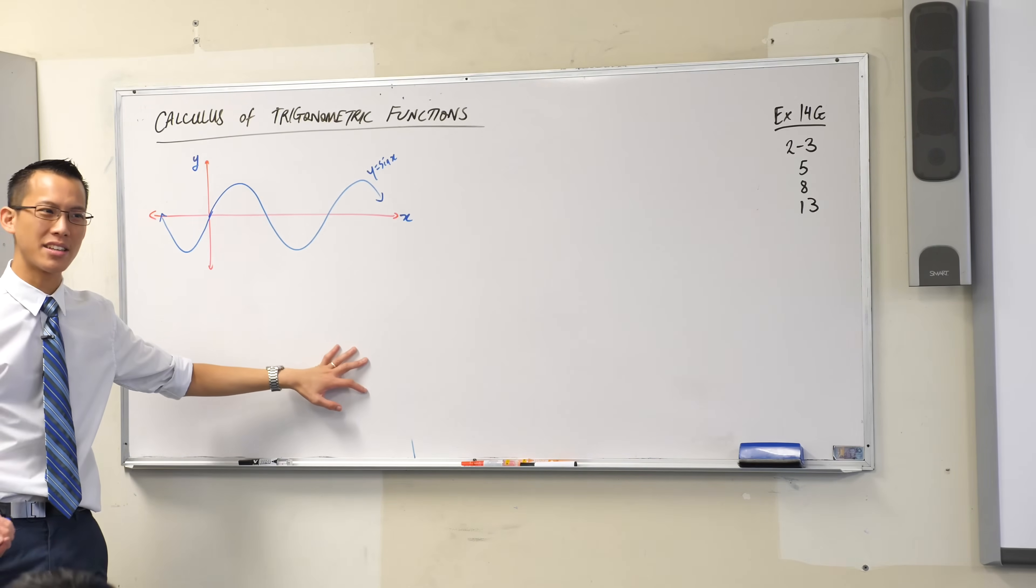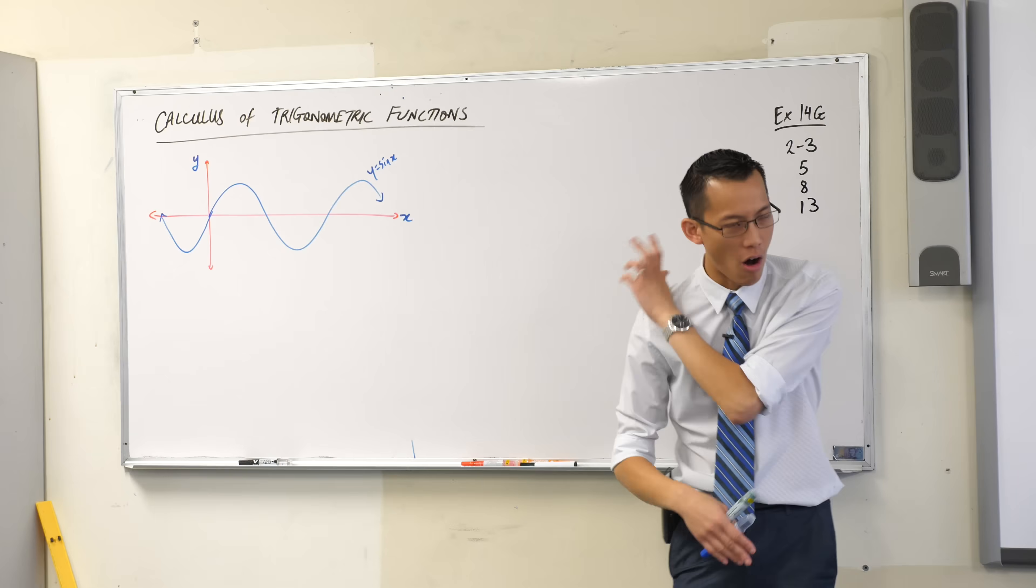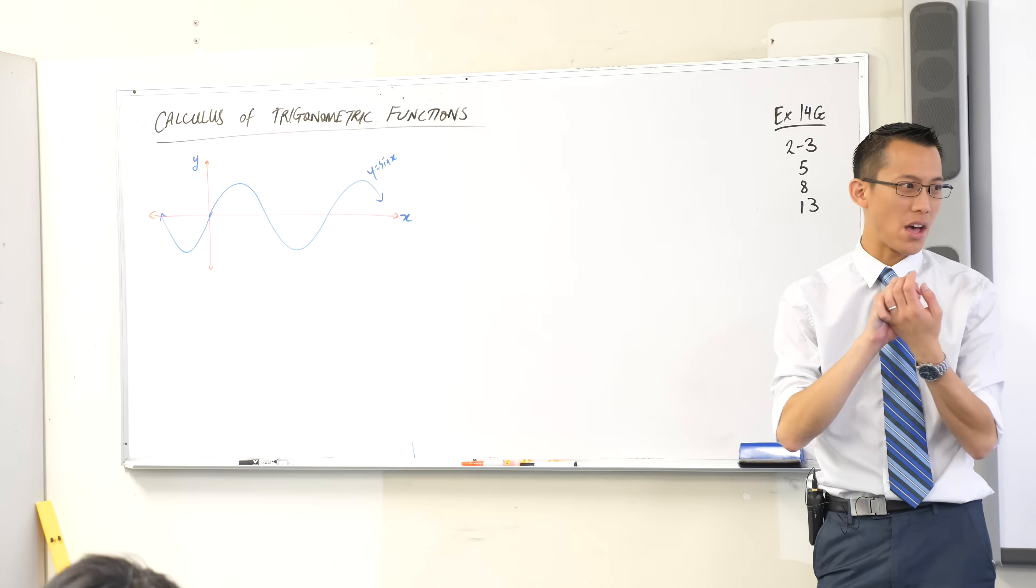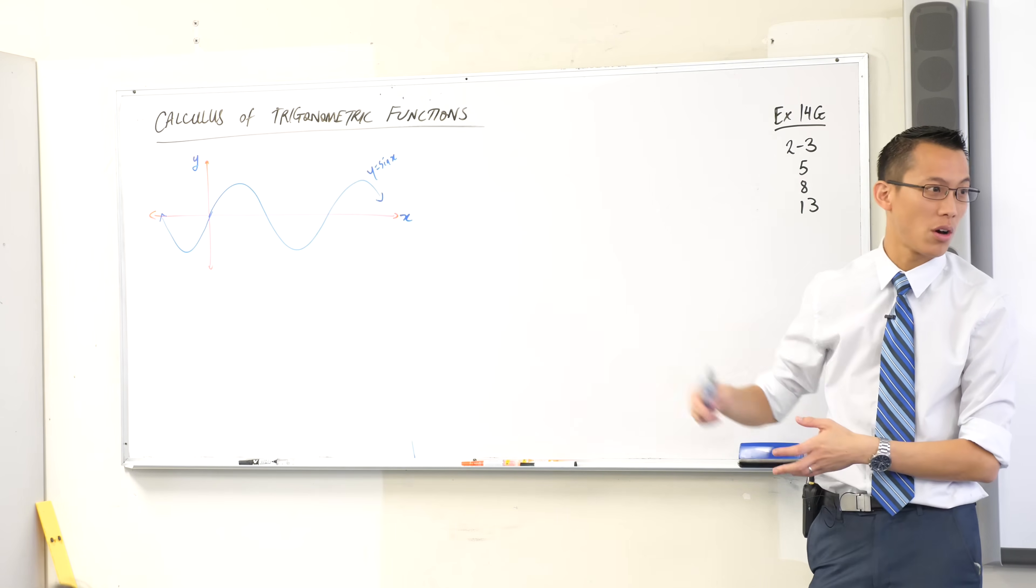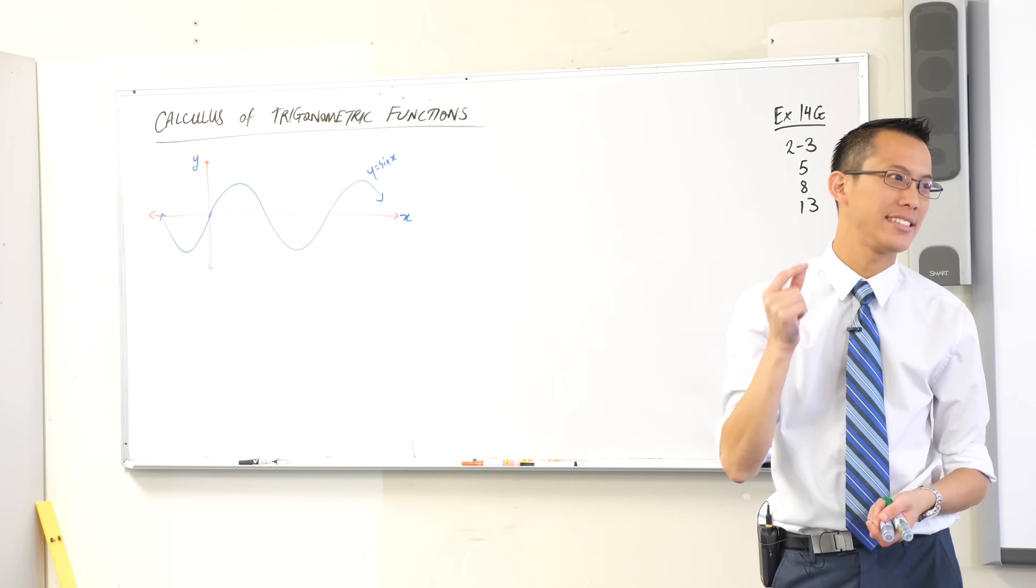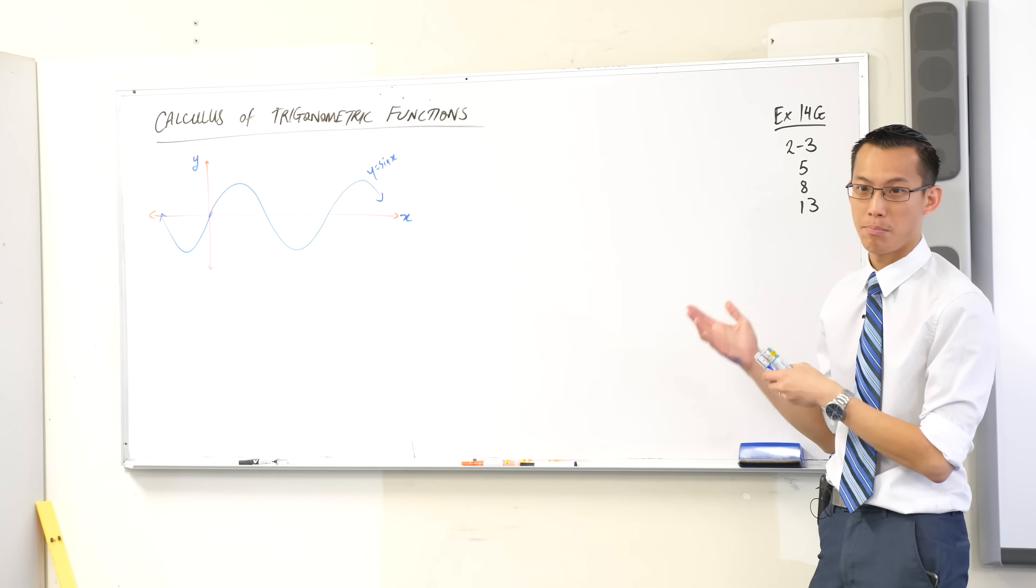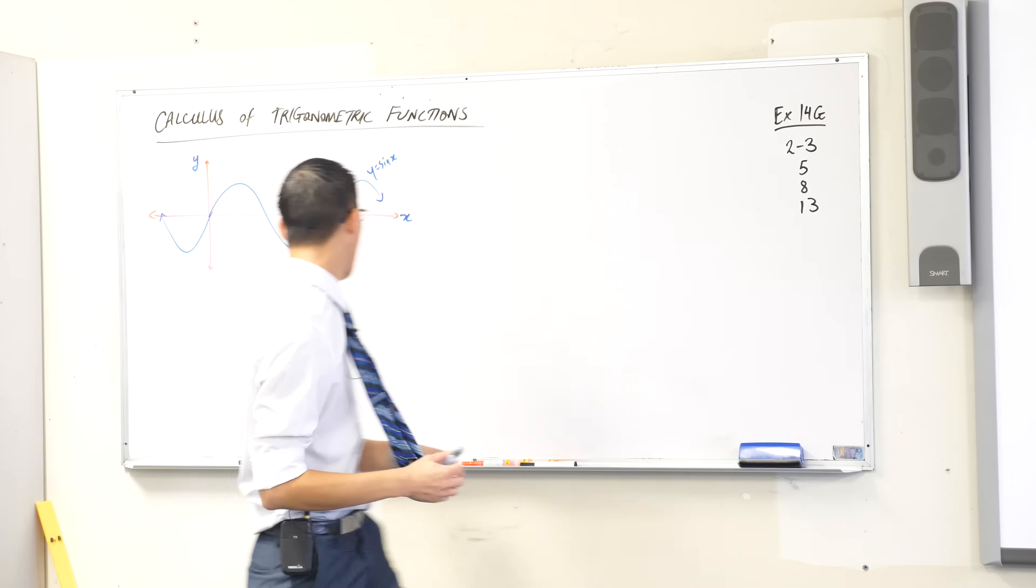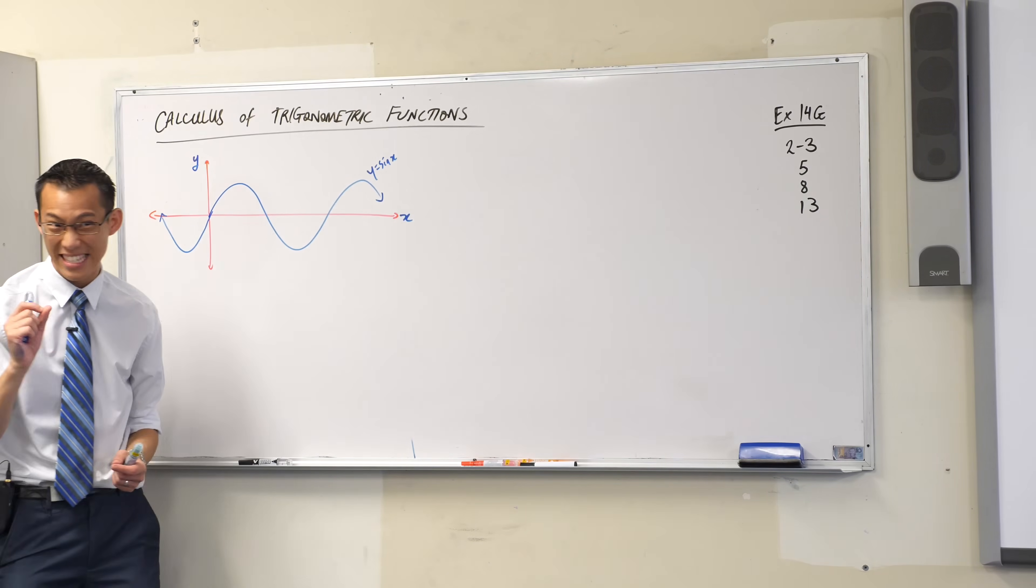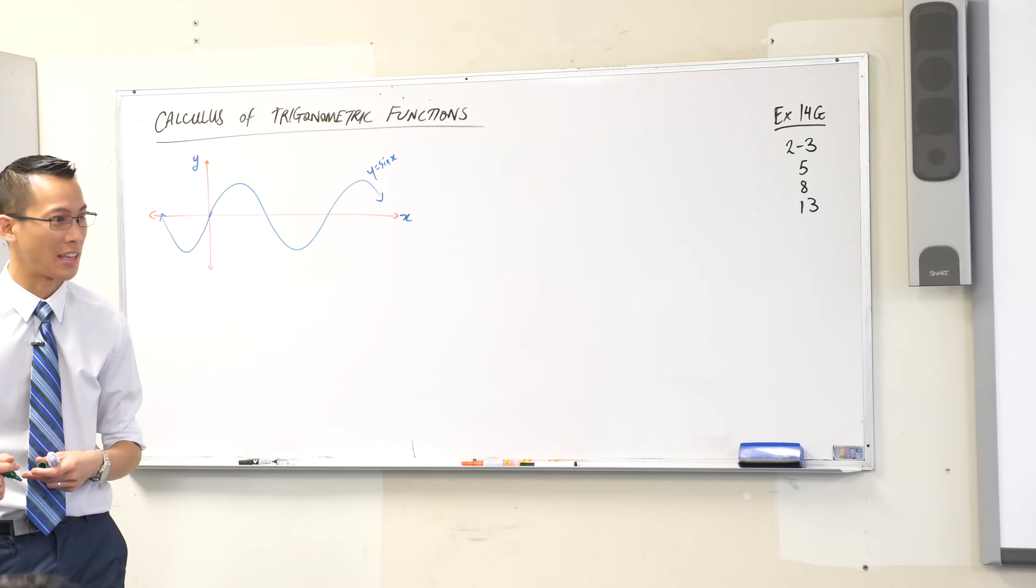So here's y equals sine x and what I want us to do is think about the gradient function of this graph because that's all the derivative is trying to find right? Now a lot of this we don't know about but there are some particular points on this graph where you can not just roughly you can exactly tell me what the gradient will be at those points. Have a look, I count on the part that I've drawn I count one two three four spots exactly where you should be able to tell me what the precise gradient is. Can you see them?